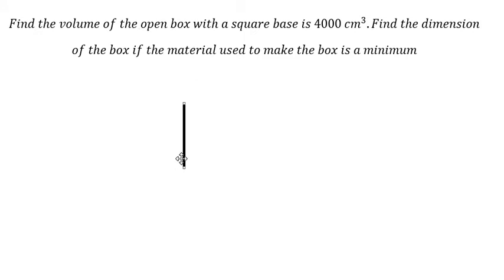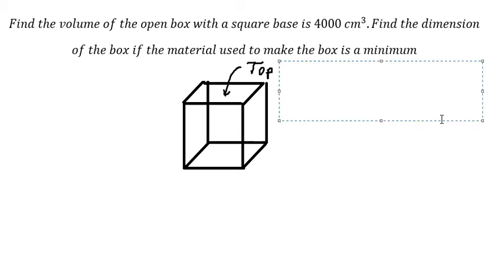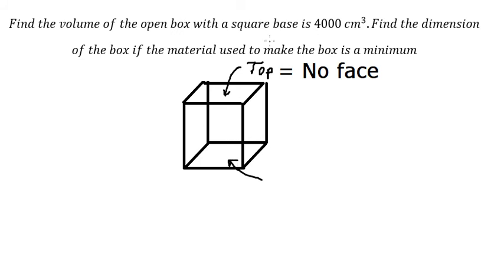So let's see, we have the box in here, something like this. Open box, that means on the top we don't have a face. That means we only have five faces in here, and we know that on the bottom, the base, it's a square.